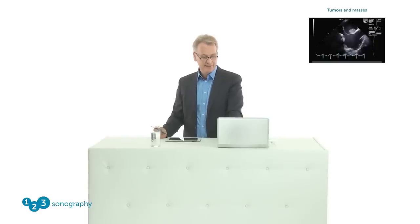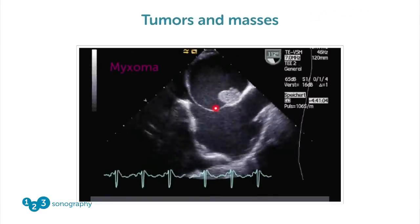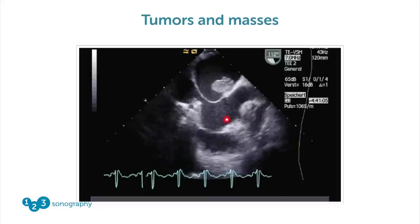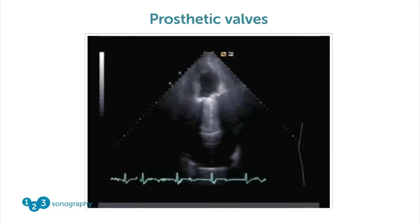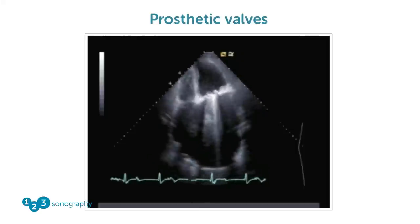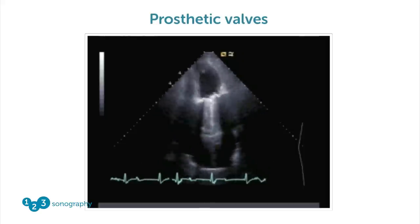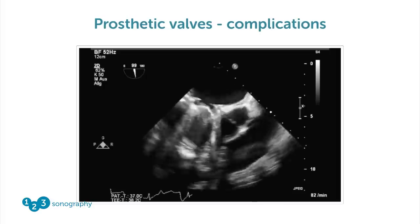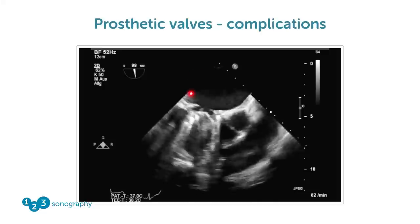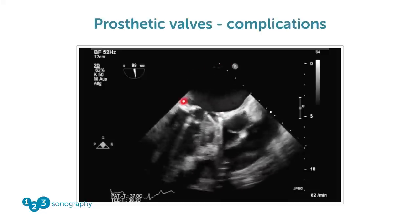One of the strengths of TEE is that we can look at tumors and masses — an example of a myxoma seen on the interatrial septum. TEE also permits us to look at prosthetic valves, which are very difficult to image from a transthoracic approach due to shadowing. But if we perform a TEE, we see the left atrium very nicely, and that's where we have most of the pathologies.